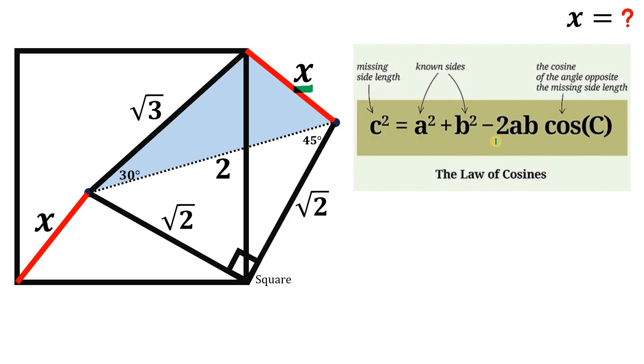So let's see, using the law of cosines to this triangle, we can say that x squared equals 2 squared plus square root of 3 squared minus 2 times 2 times square root of 3 times cosine of 30 degrees.